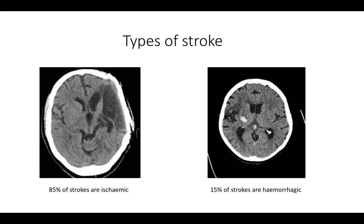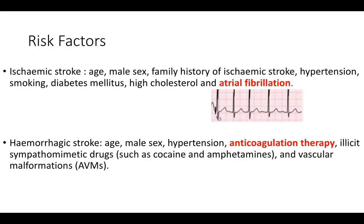There are two types of stroke: 85% ischemic and 15% hemorrhagic. On CT, ischemic stroke appears as a hypodensity, while hemorrhagic stroke appears as a hyperdensity. Risk factors for stroke are largely vascular and overlap with cardiovascular risk factors including age, male sex, family history, hypertension, smoking, and diabetes. Atrial fibrillation is a particularly important risk factor to focus on.